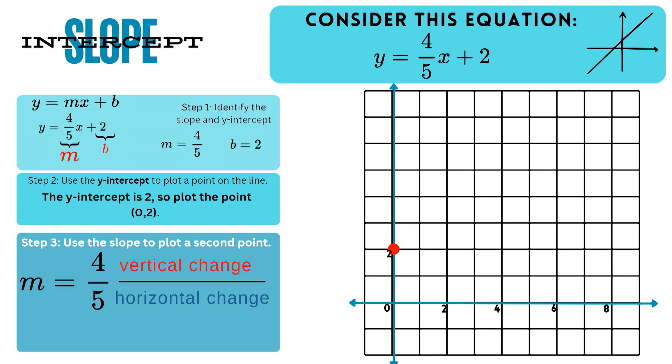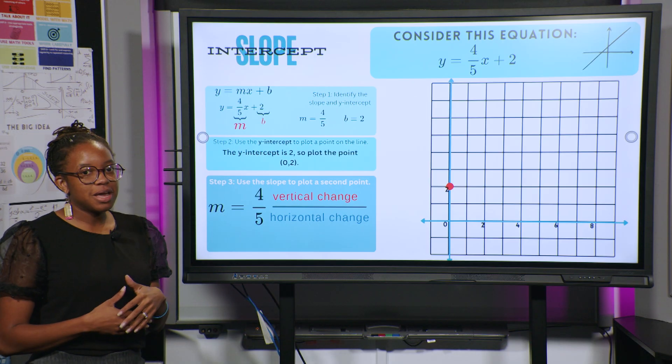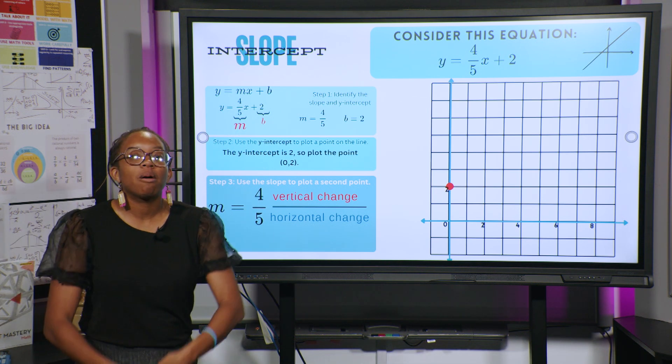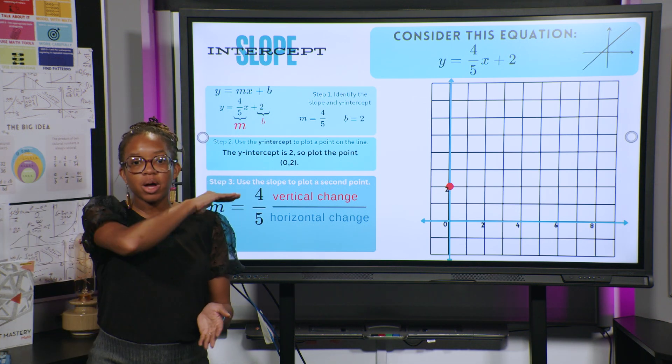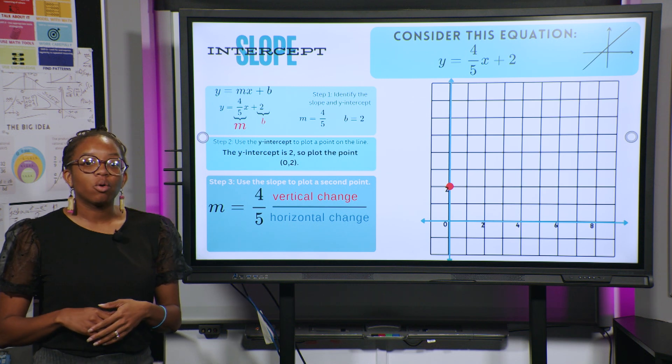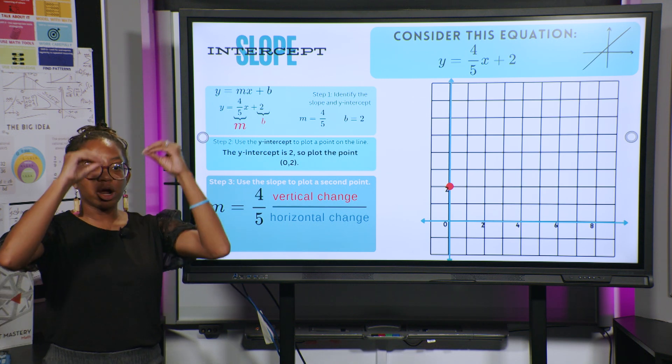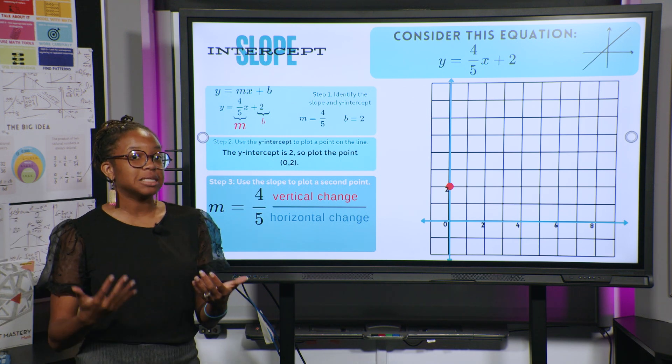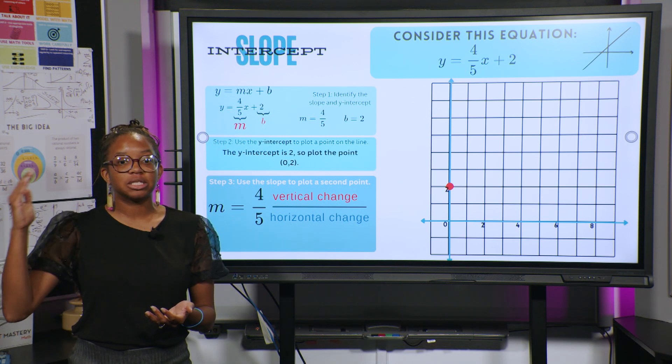Step 3 is to then use the slope to plot a second point. So our m, we're going to use 4/5 as our slope. So we think of it as our rise over our run. So our rise is when we go up vertically. Our run is when we go horizontally. So we're going to go up 4 units and we're going to run to the right, because it is a positive number, 5 units to the right.